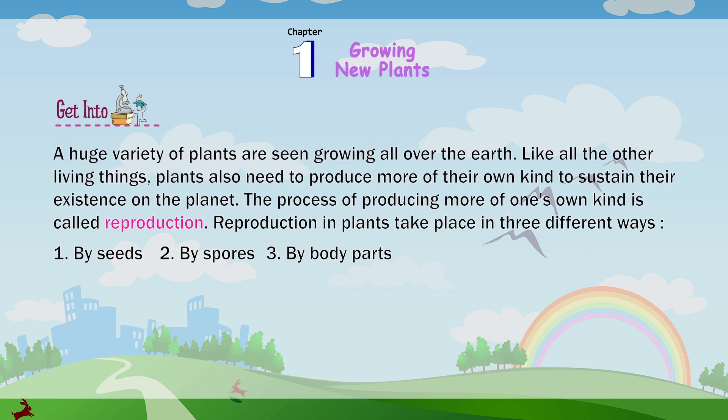A huge variety of plants are seen growing all over the earth. Like all other living things, plants also need to produce more of their own kind to sustain their existence on the planet. The process of producing more of one's own kind is called reproduction. Reproduction in plants takes place in three different ways.